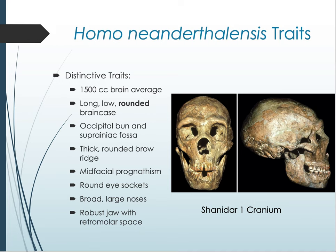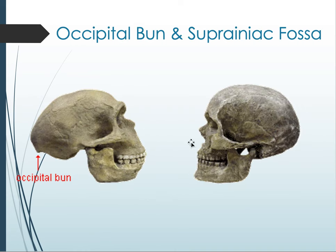Let's look at the distinctive traits of Homo neanderthalensis, especially traits related to the arctic environment. They had the largest average brain of any early human: 1,500 cubic centimeters. The skull is long and low but with a more rounded brain case overall, as well as an occipital bun and the suprainiac fossa — a small depression at the back of the skull. These extra projections, including the occipital bun, imply they had a great amount of neck musculature to hold their heavy heads up.